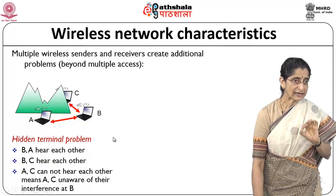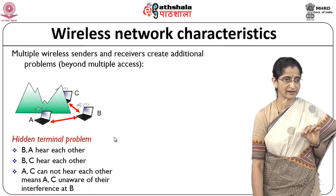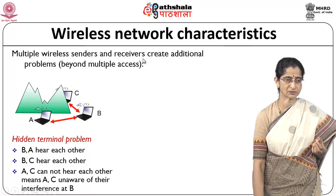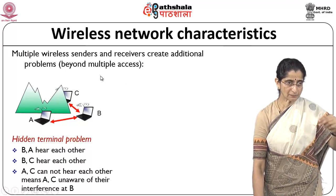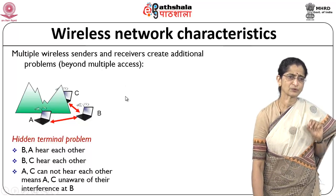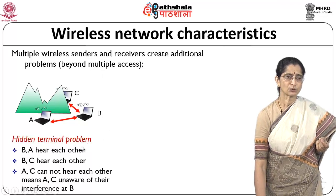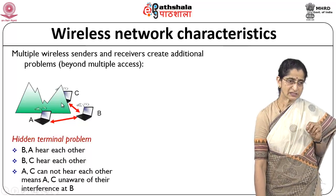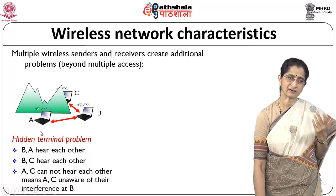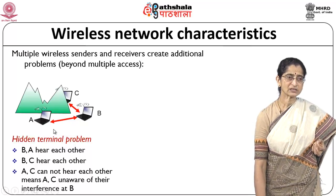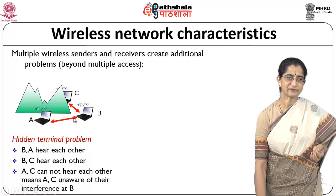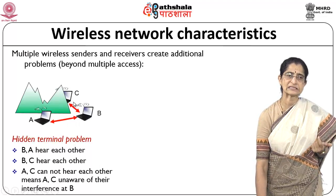When we have multiple wireless senders and receivers, there are additional challenges. One very common problem is the hidden terminal problem. Consider three nodes A, B, and C: B and A can hear each other, B and C can hear each other, but A and C cannot hear each other. If C is transmitting to B, A is unaware of it. If A and C simultaneously transmit to B, there will be interference at B. We say A and C are hidden with respect to each other.